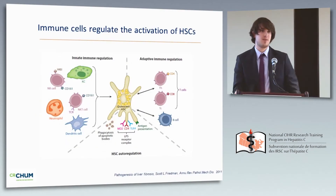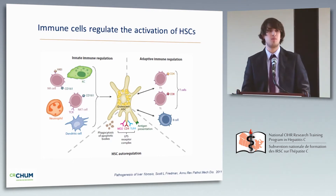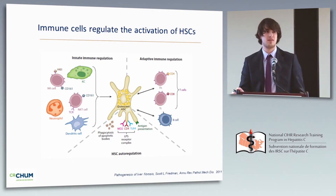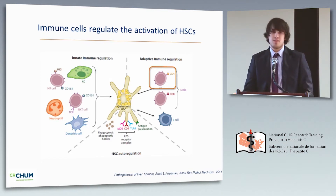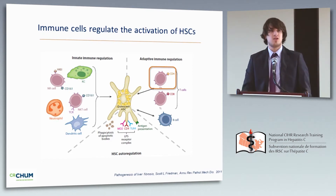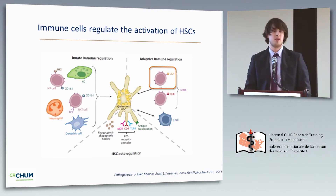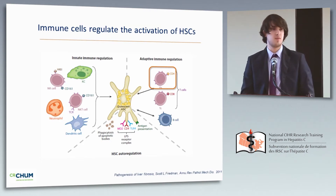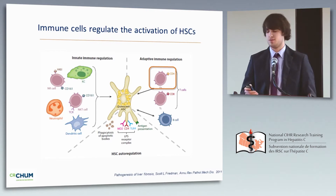Liver fibrosis is characterized by the activation of hepatic stellate cells and can be controlled by both innate and adaptive immunity. Our group is interested in the interaction between CD4 T cell subsets and hepatic stellate cells, because individuals infected with HIV, who have altered CD4 T cell function, progress more rapidly through liver fibrosis.